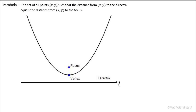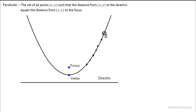What the definition is telling us is that this parabola is made up of all the different points so that if we looked at the distance from a point to the focus, it would be the same distance from that point straight down perpendicular to the directrix. So if we take a point, we draw a line from this point to the focus and a line from this point down to the directrix, and the length of these two lines are equal.